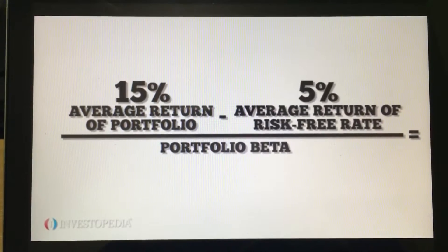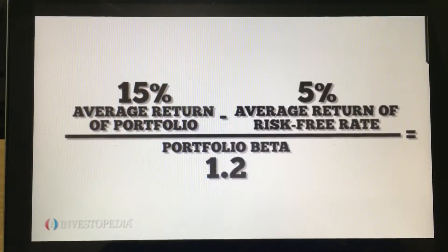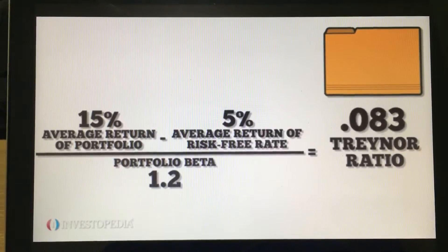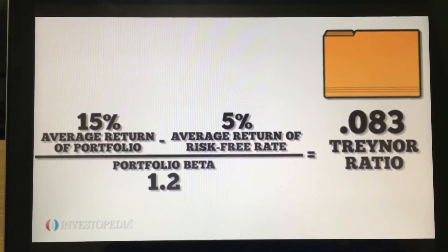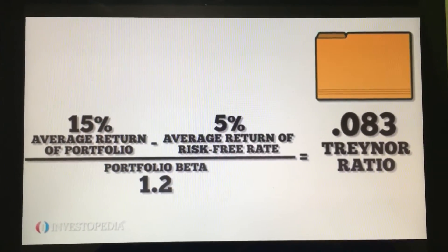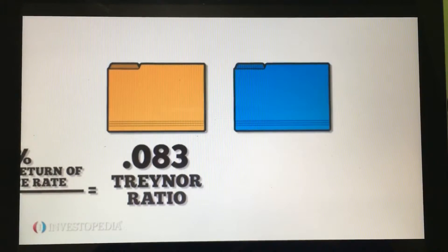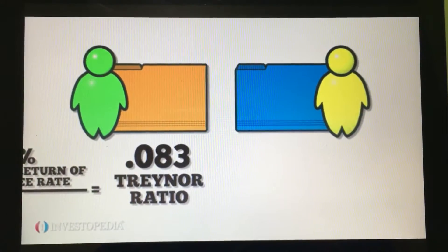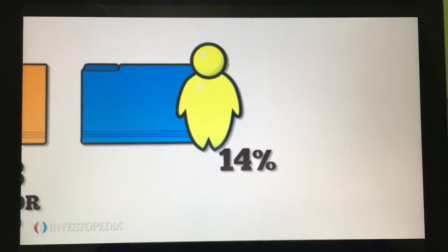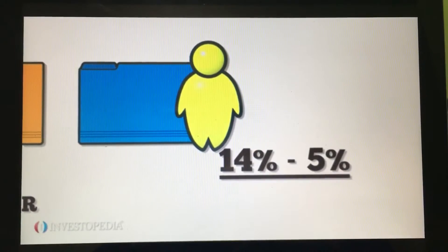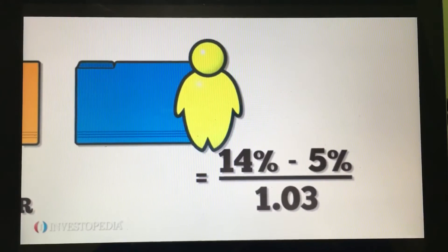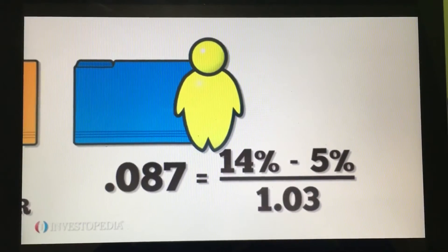For example, a portfolio has a return of 15% and the average return of the risk-free rate is 5%. Its beta is 1.2, so its Treynor value is therefore 0.083. The ratio can also evaluate the performances of different portfolio managers. For example, say another portfolio has a return of 14% and the average rate of return is 5%. Its beta is 1.03, so its Treynor value is 0.087.